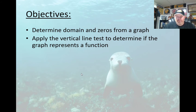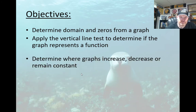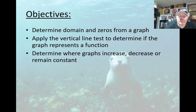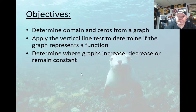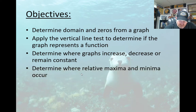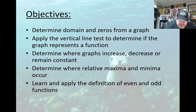The vertical line test is something you learned about in algebra 2 and something I talked about in the last section as well. We'll determine where graphs increase, decrease, or remain constant — that's just graphical, not anything you have to do with an equation yet. We're also going to determine where relative maxima and minima occur, and lastly learn about the definition of odd and even functions.